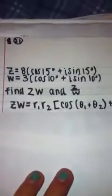Find Z times W and Z divided by W. Z times W is equal to R1 times R2 cos theta 1 plus theta 2 plus I sine theta 1 plus theta 2.